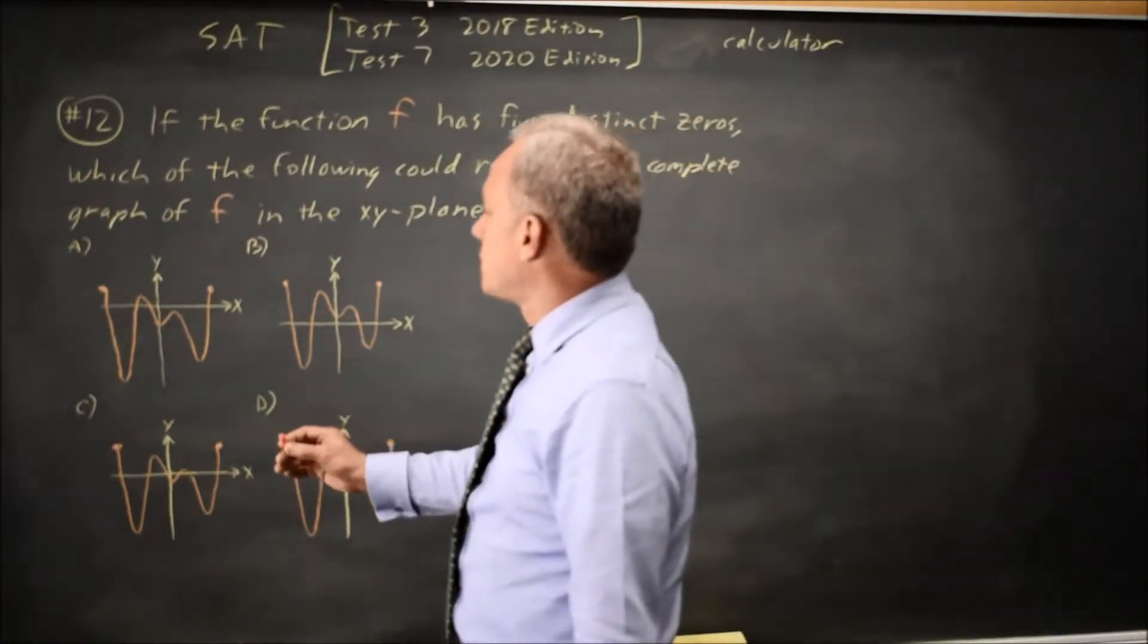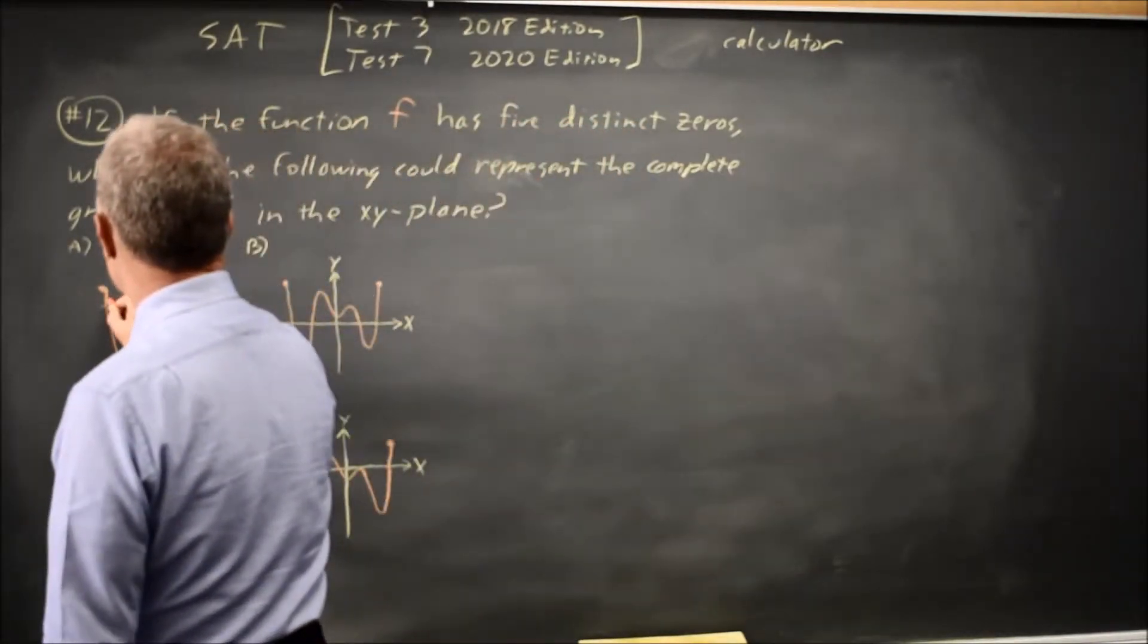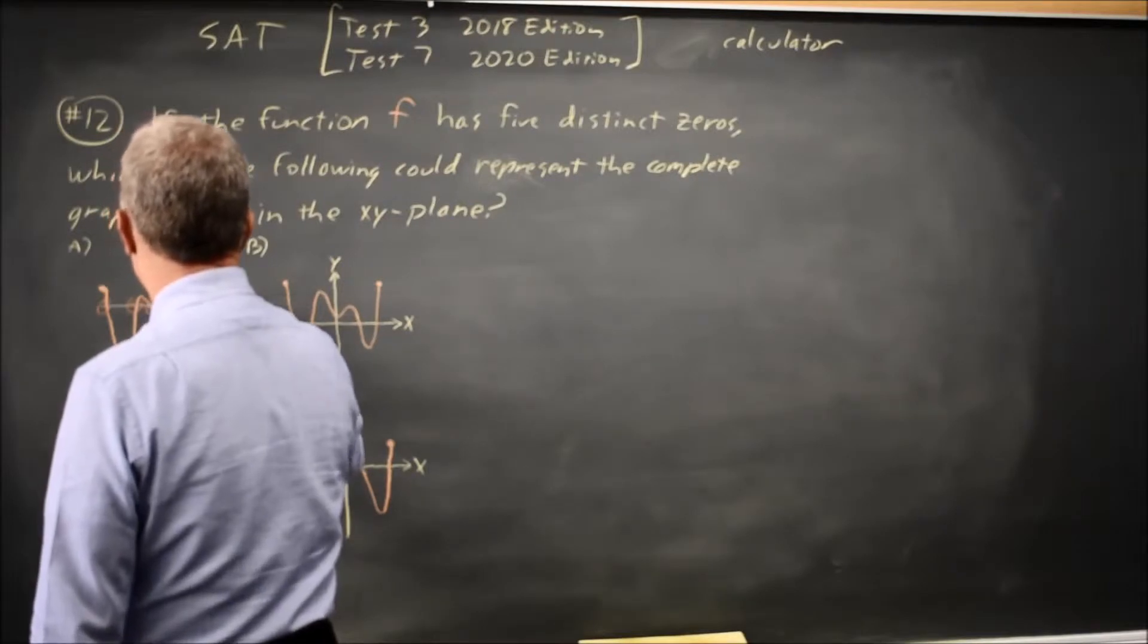So we're going to count the x-intercepts and see which of these graphs has five distinct x-intercepts. Here we have 1, 2, 3, 4...